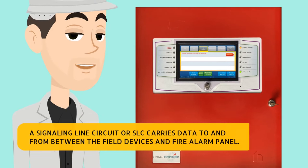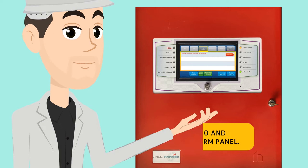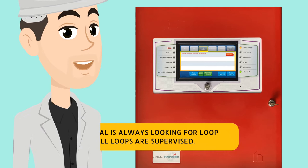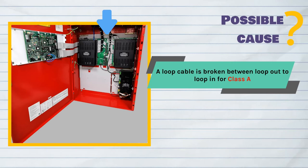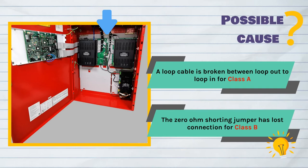A signaling line circuit, or SLC, carries data to and from between the field devices and the fire alarm panel. The SLC loop in terminal is always looking for the loop out terminal — all loops are supervised. The possible cause of loop open circuit trouble is either a loop cable is broken between loop out to loop in for class A, or the 0 ohm shorting jumper has lost connection for class B.